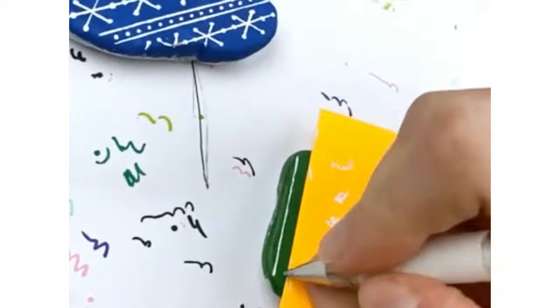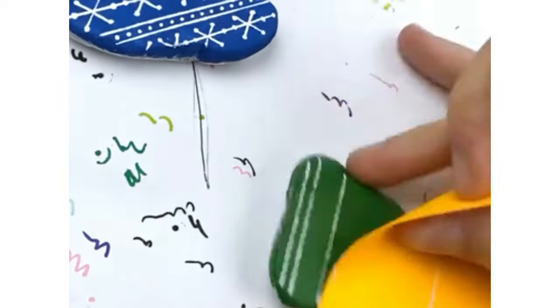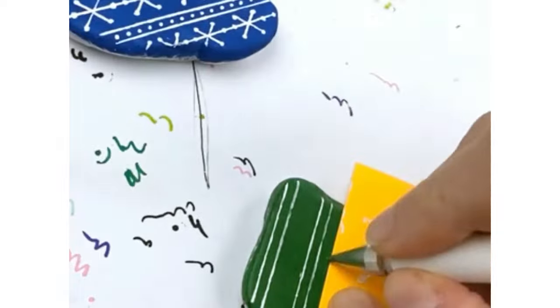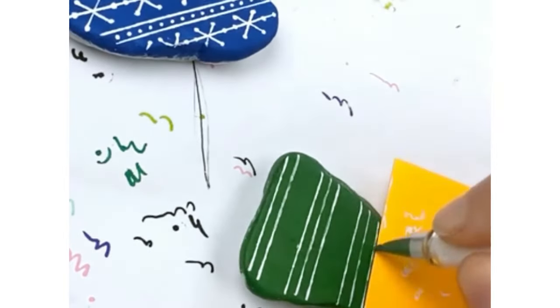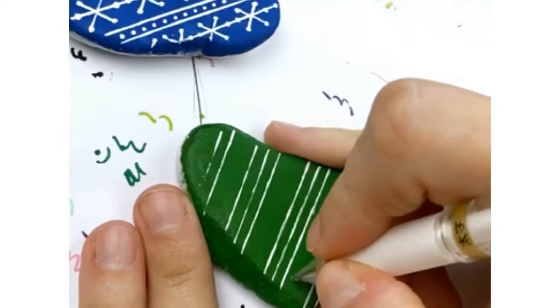Next we're going to do our little Christmas trees. For this one we're going to do two lines close together and then one further apart, and then repeat that all the way up. Now you can do multiple little lines together or just a singular one, however you want to do it.